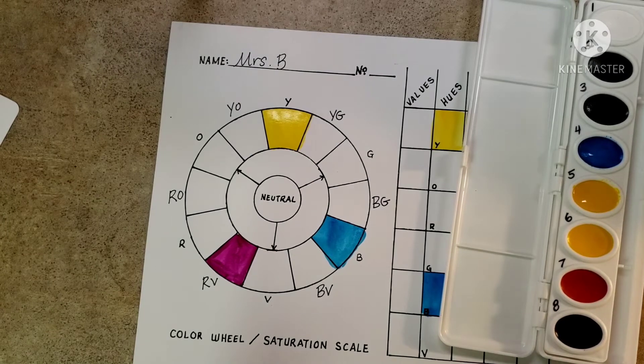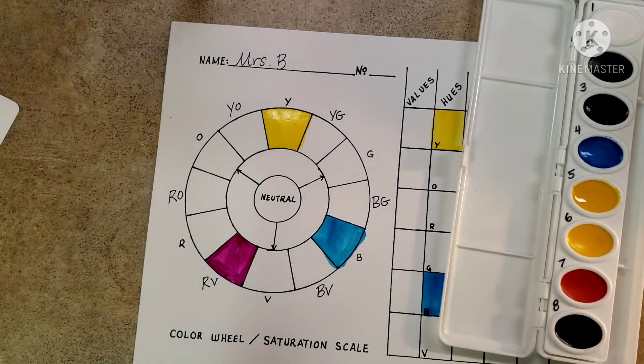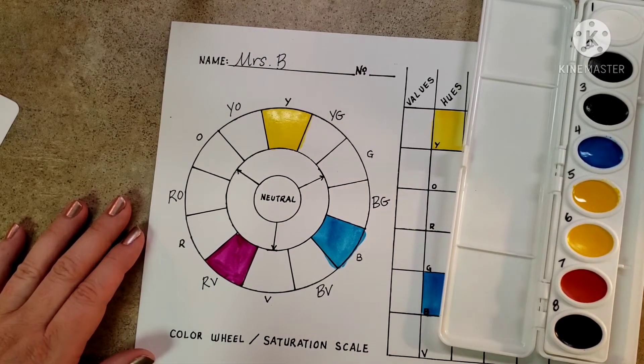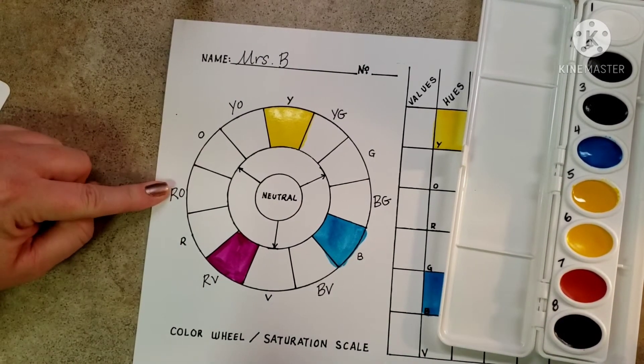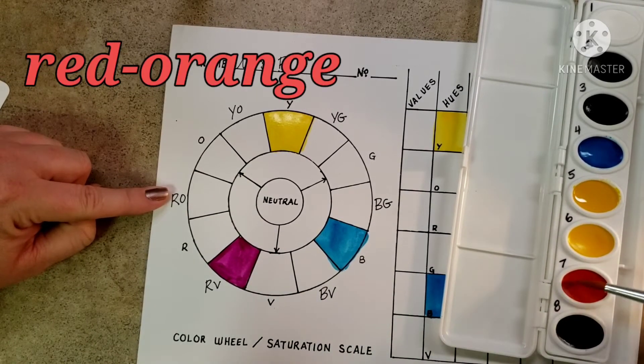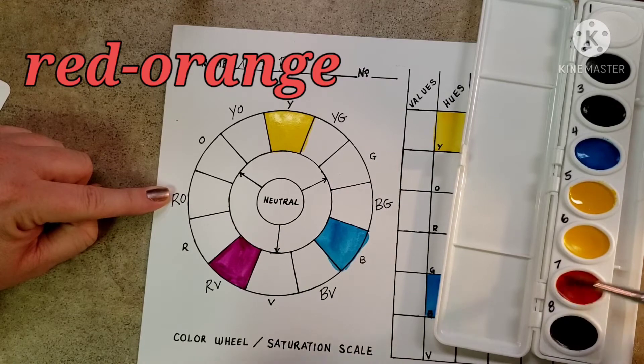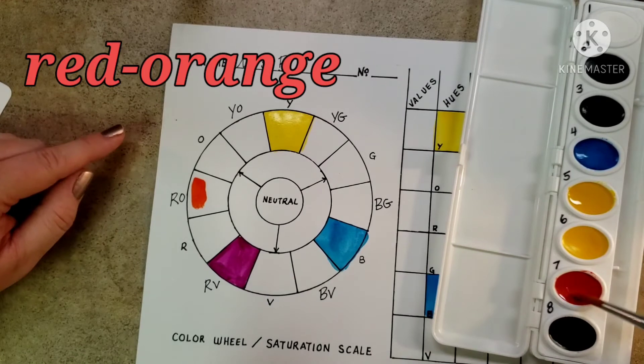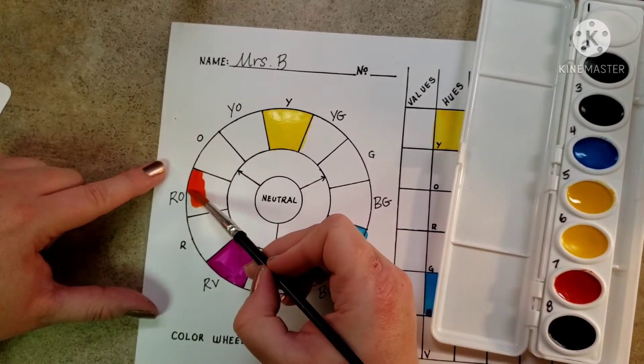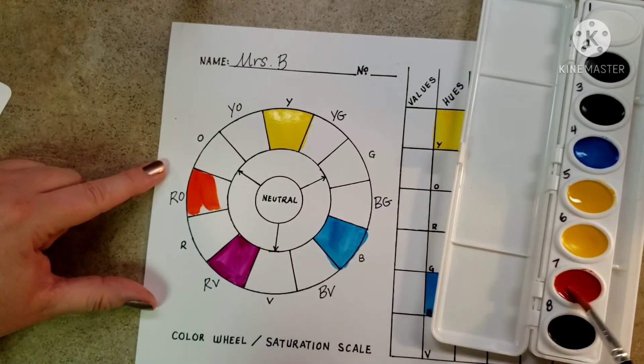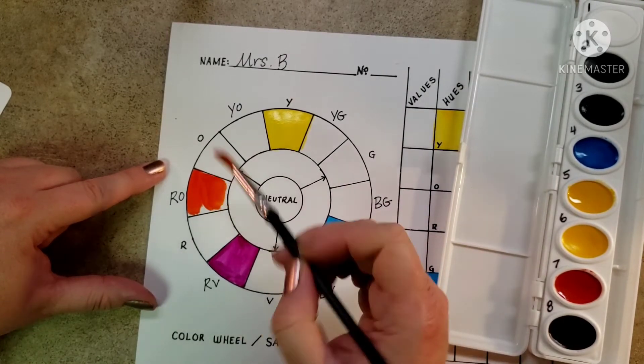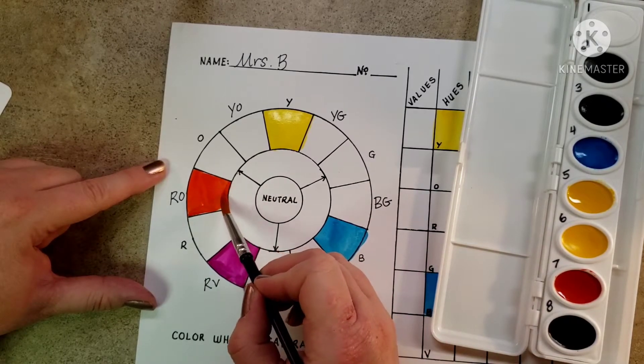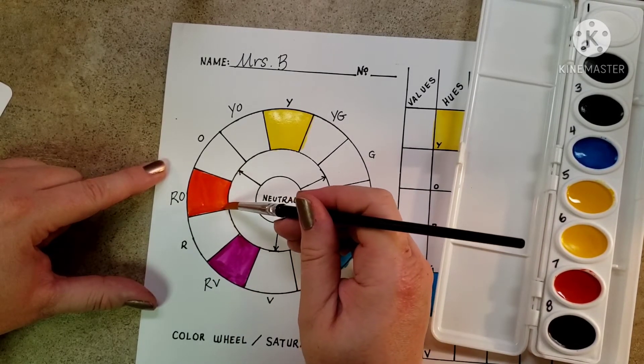Okay next we're going to do red orange which is number seven in your paint tray. Please wash your brush well in between colors. Red orange, number seven in your tray, a little bit of water just enough to activate it. Don't lean on wet paint, so this is a dark orange.